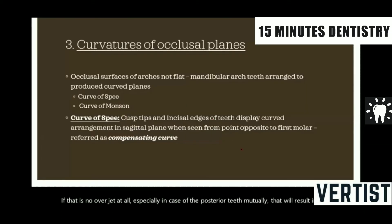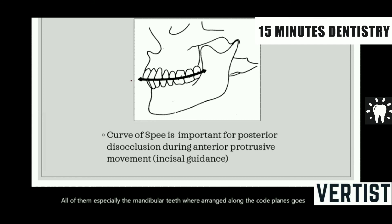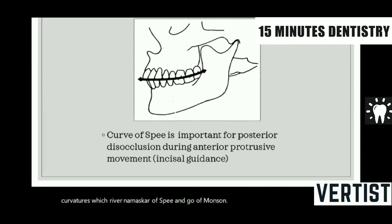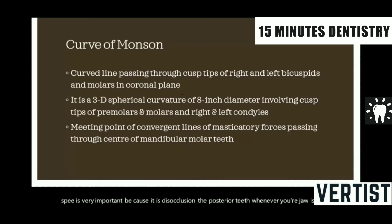Next is the curvatures of the occlusal plane. Our occlusal surfaces are not flat. Especially the mandibular teeth, they are arranged along curved planes. There are two curvatures which we refer to as the curve of Spee and the curve of Monson. The curve of Spee is also called the compensating curve. It begins from the cusp tip of the canine and follows the buccal cusp tips of all the posterior teeth. This curve of Spee is very important because it discluded the posterior teeth whenever the jaw is in a protrusive movement, what we call incisal guidance.